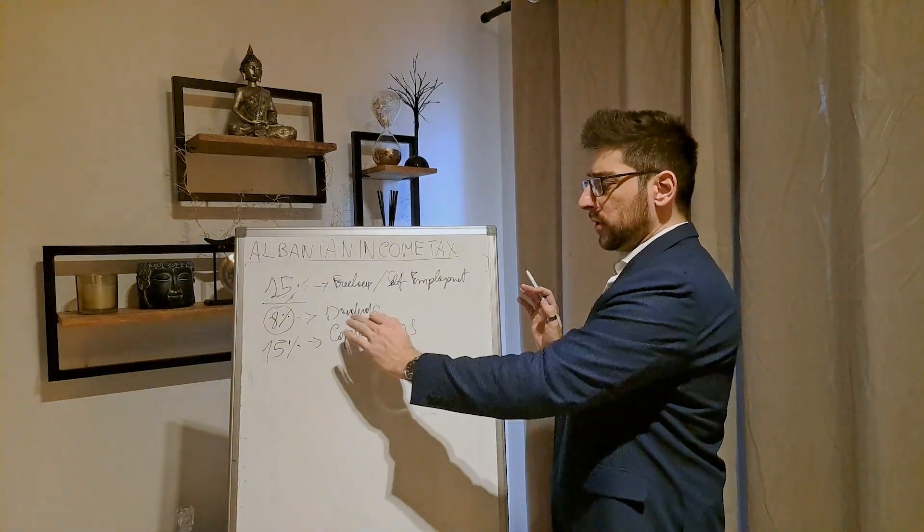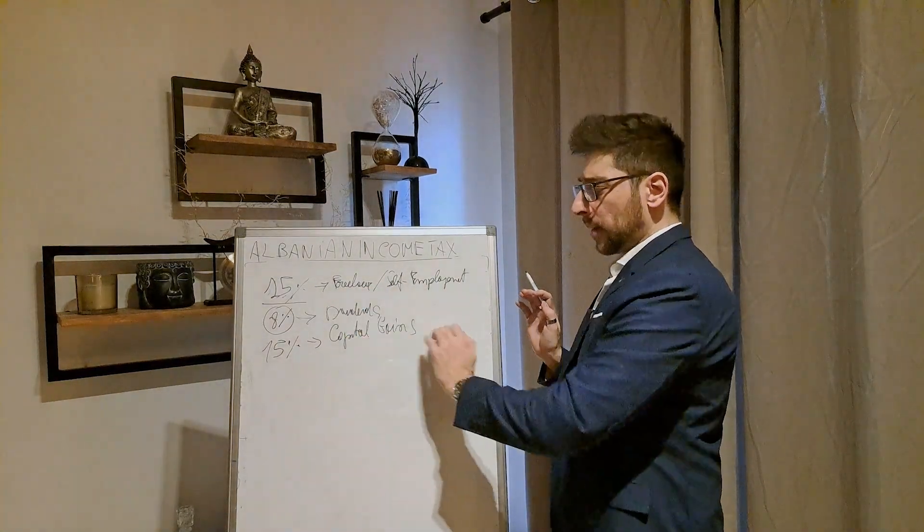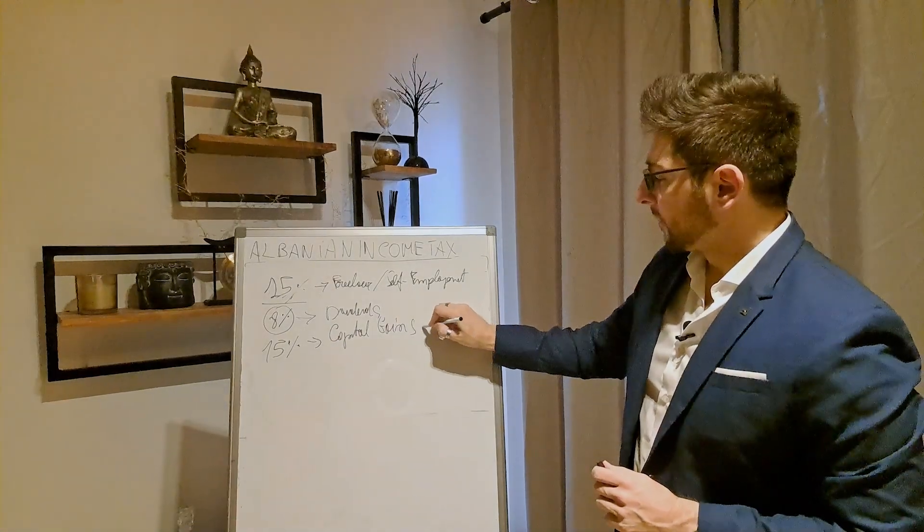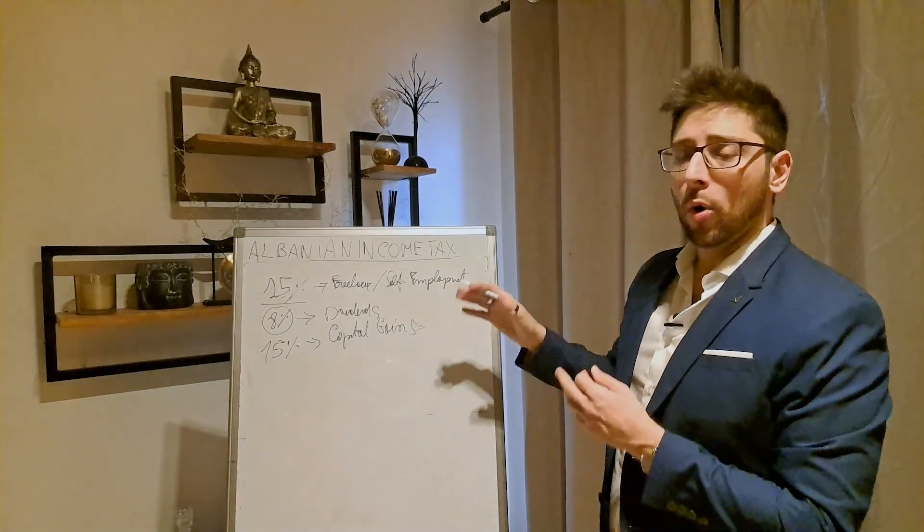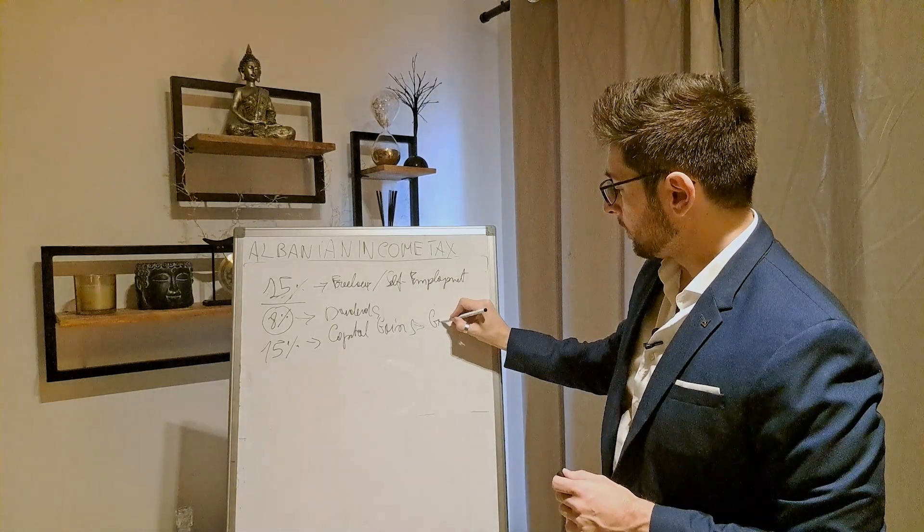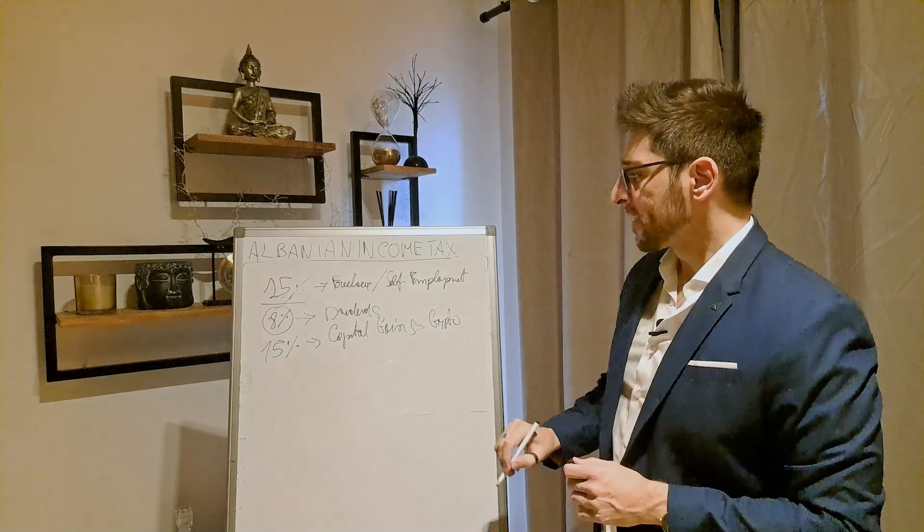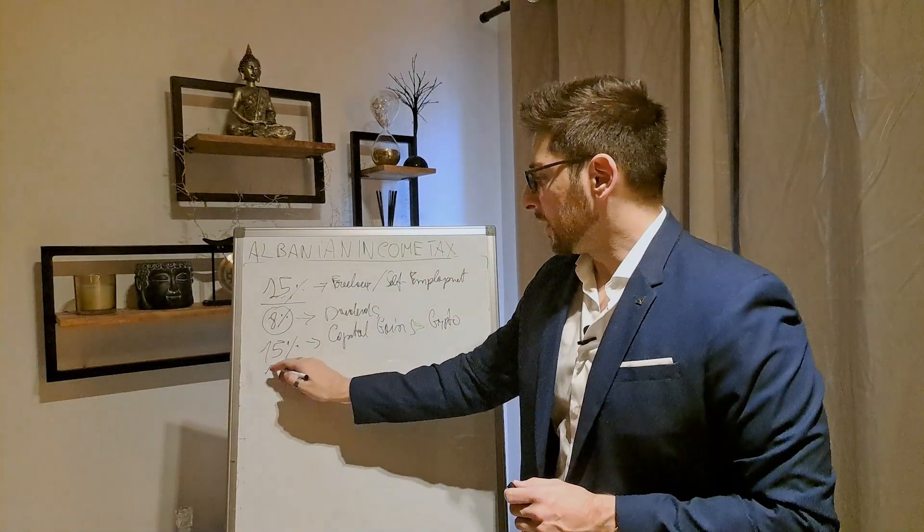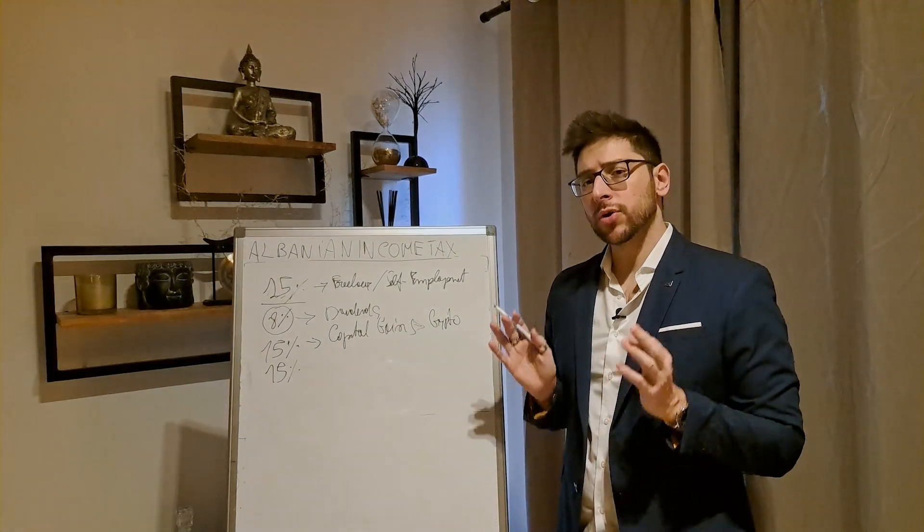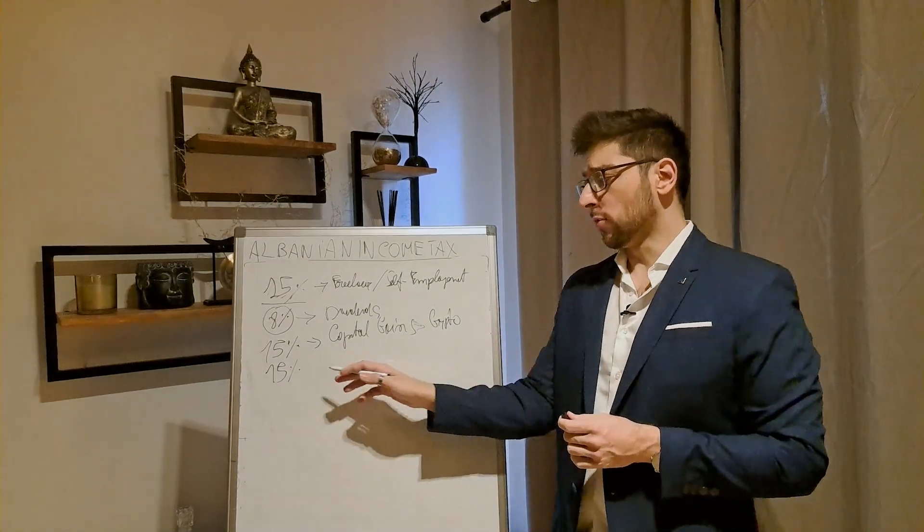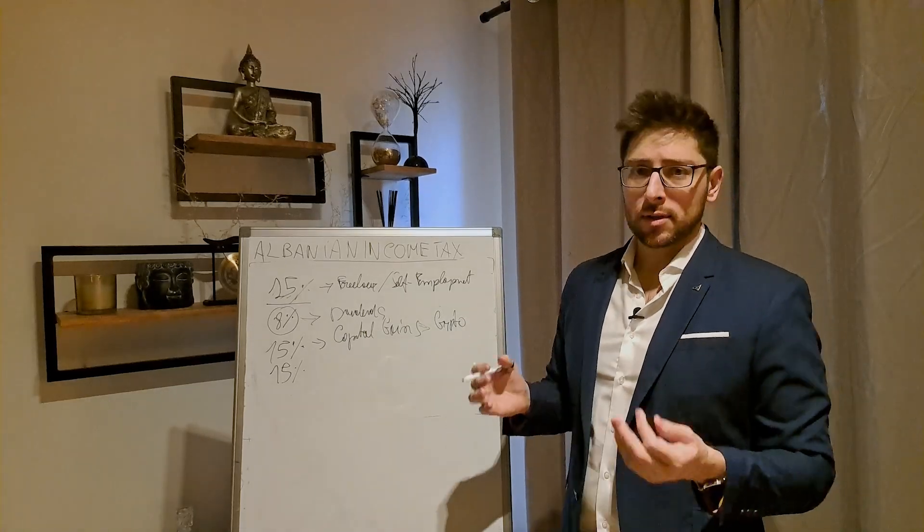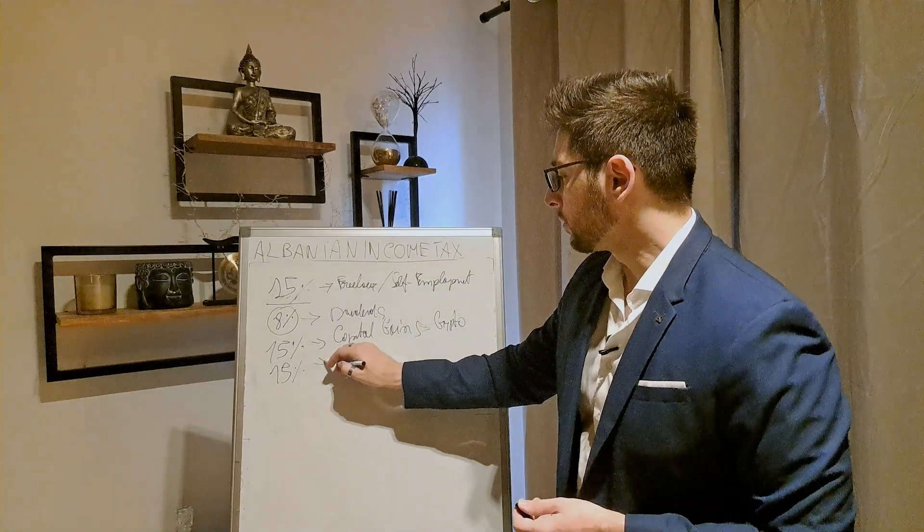So freelancer individuals, dividends towards individuals, capital gains towards individuals. 15% and this is also valid for capital gains obtained through cryptocurrencies, also for crypto, okay? Interests, 15%. As you can see here, the rate is always almost the same.